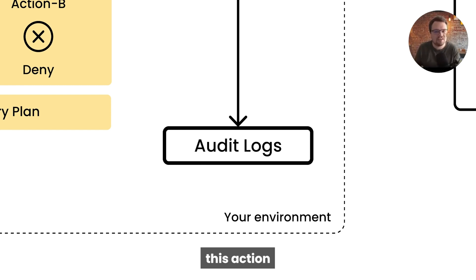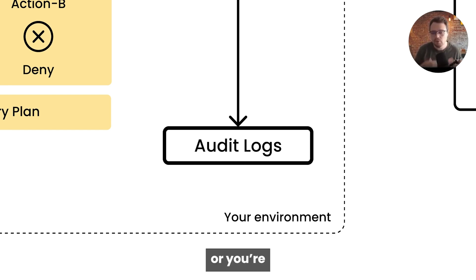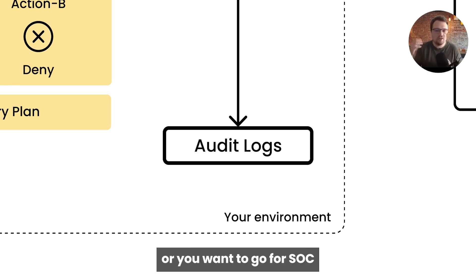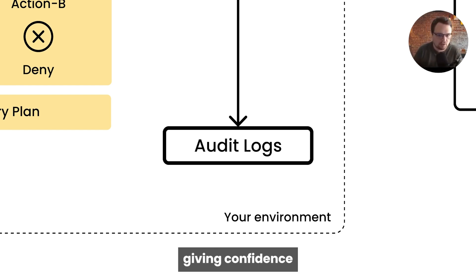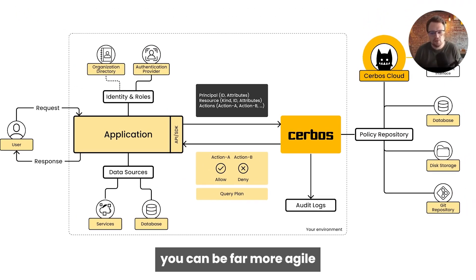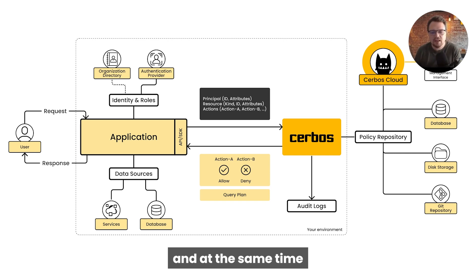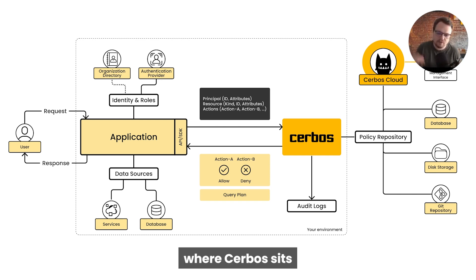At this time, this principal tried to do this action on this resource, and it was either allowed or denied by this particular policy. Which if you're working in a regulated environment, or you're trying to serve users in parts of the world that have quite stringent data protection laws, or you want to go for SOC 2 or ISO compliance, having this strong audit log of knowing exactly who tried to do what inside of your system and the decision is vital. By decoupling this application logic out into policy, you can be far more agile and evolve your policy, and at the same time you get the strong access control and audit log of what happened inside of your system. And that's where Cerbos sits inside of your stack.